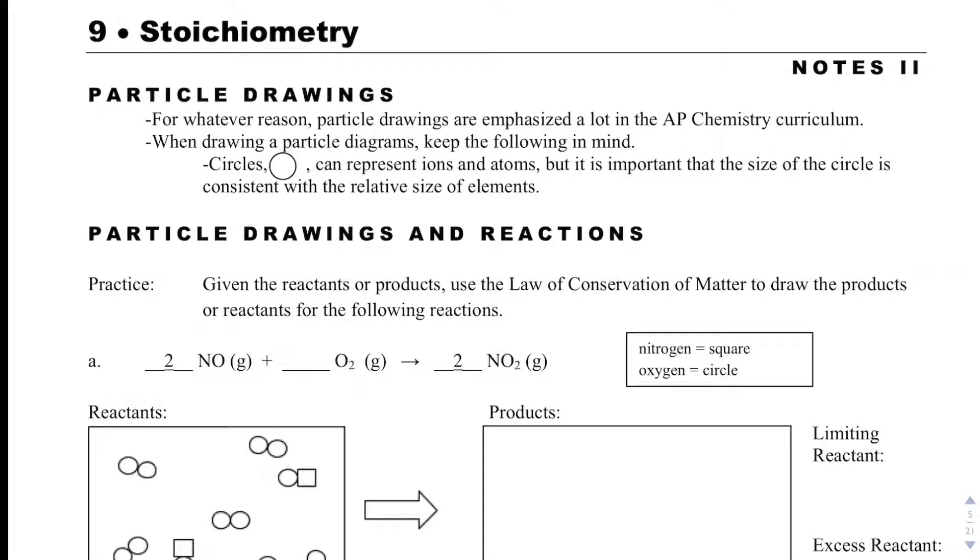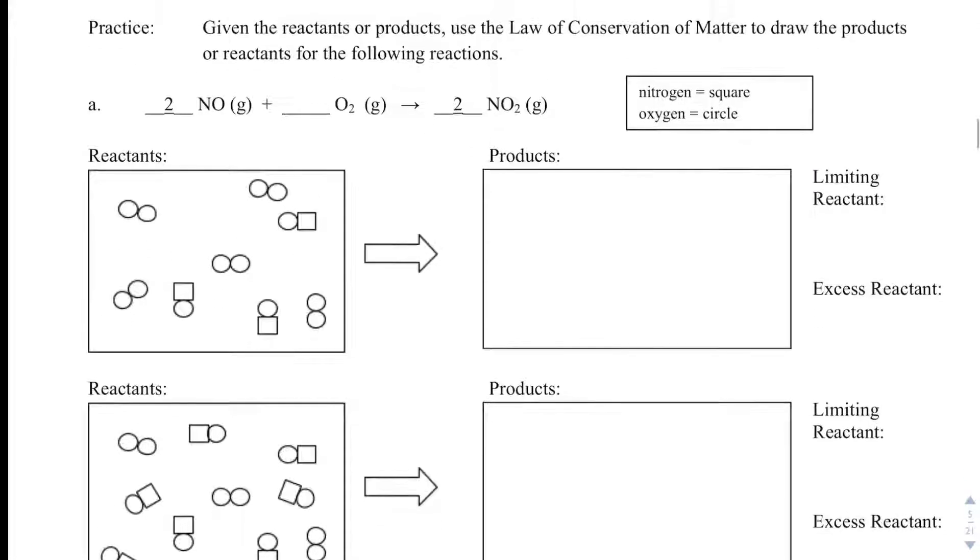In this video, we will discuss how to read particle drawings and how to predict the products from a particle drawing. So what I have down here is some particle drawings, and just as a review, we are going to follow the Law of Conservation of Matter, so my product box over here will still have the same number of circles and squares that I started with, and what's important is that if shapes are touching, that means that they are bonded together.